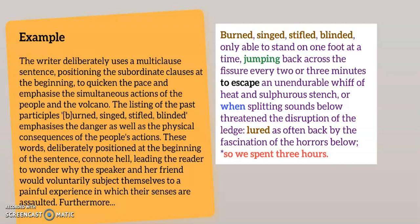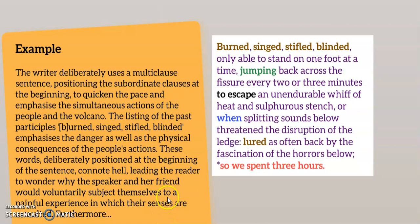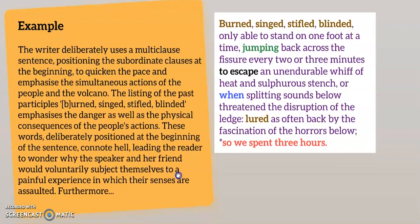Here's an example analysis of the previous extract from Isabella Bird's journal. I'm going to make my point: the writer deliberately uses a multiclause sentence, positioning the subordinate clauses at the beginning to quicken the pace and emphasise the simultaneous actions of the people and the volcano. Now for evidence and terminology: the listing of the past participles — burned, singed, stifled, blinded — emphasises the danger as well as the physical consequences of people's actions. These words, deliberately positioned at the beginning of the sentence, connote hell, leading the reader to wonder why the speaker and her friend would voluntarily subject themselves to a painful experience in which their senses are assaulted.